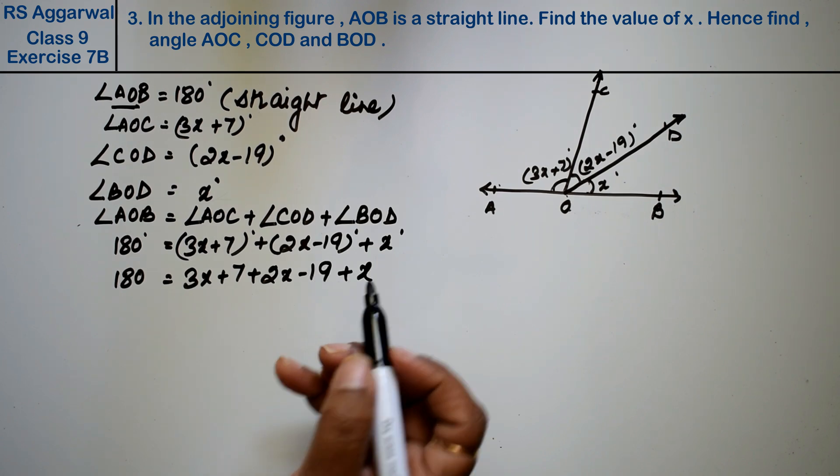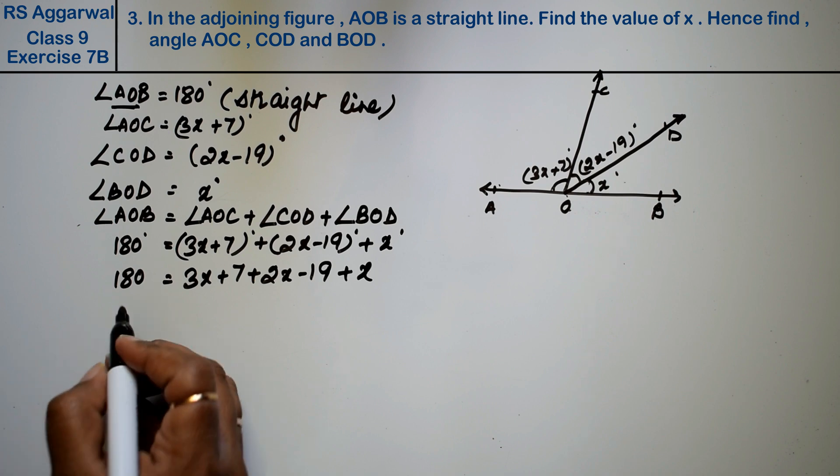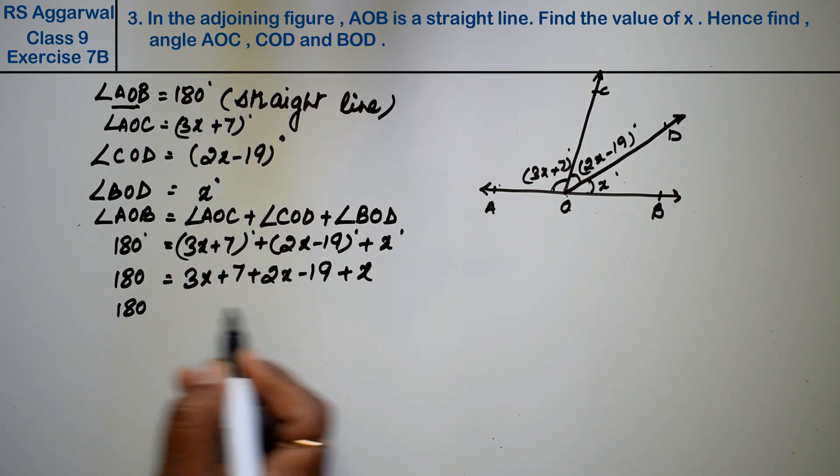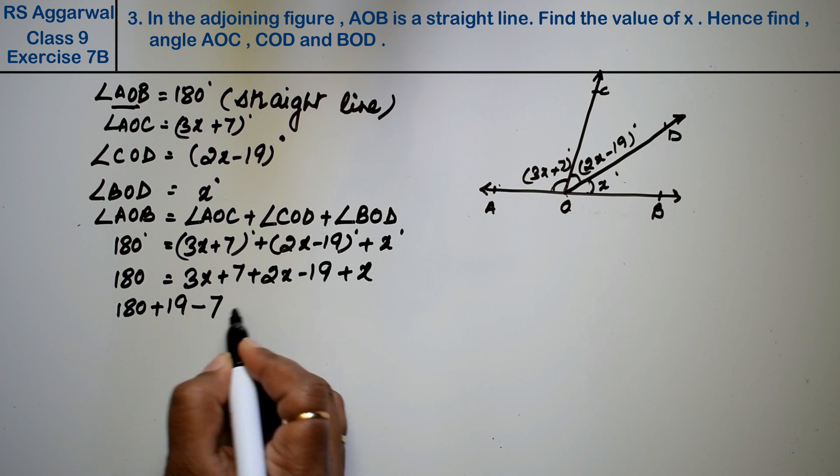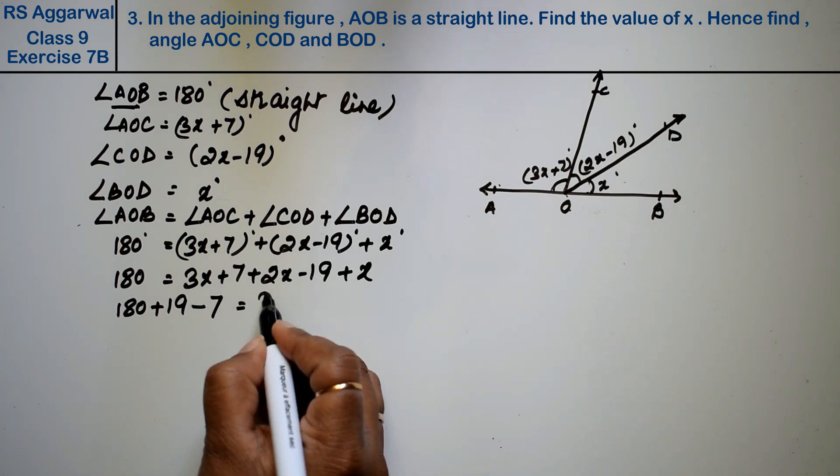We'll remove degrees and add them back in the answer. Now x terms together, non-x terms together. 180, this was minus so plus 19, this was plus so minus 7. Now see, 3x plus 2x plus x.